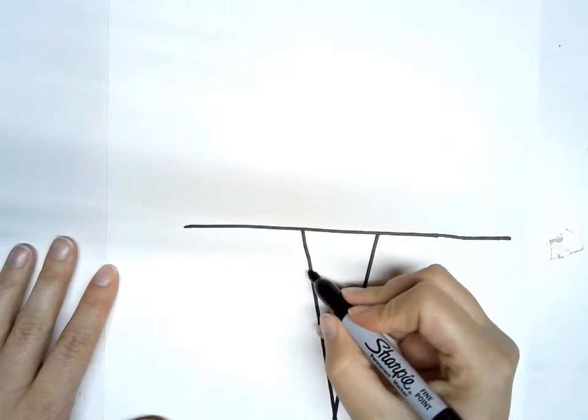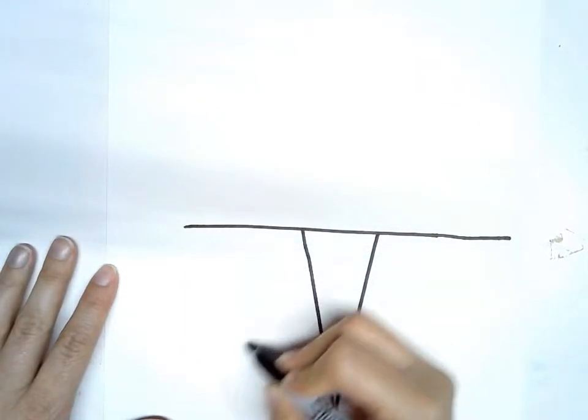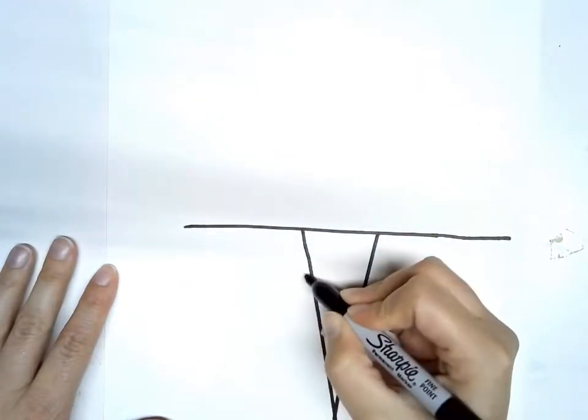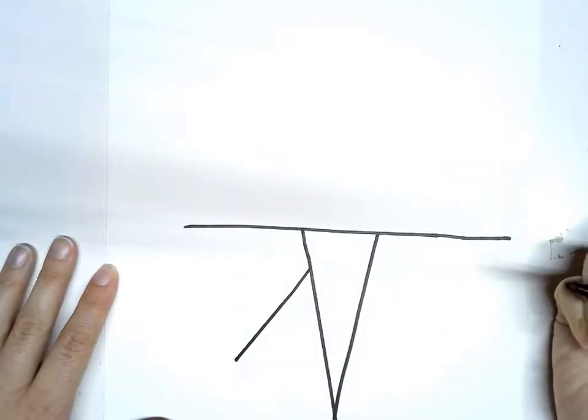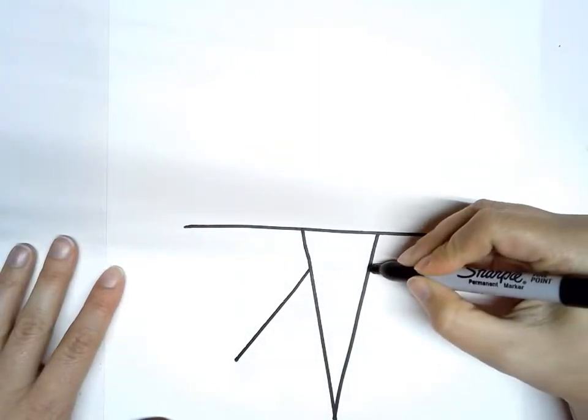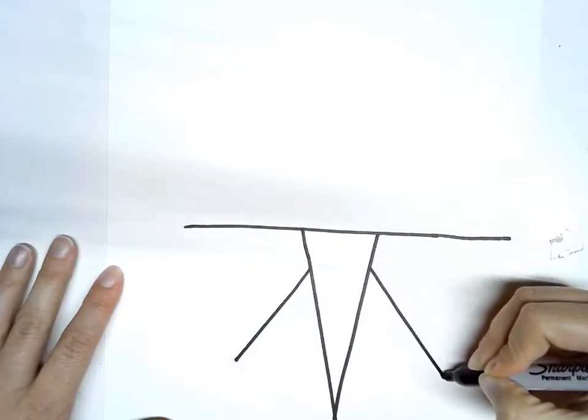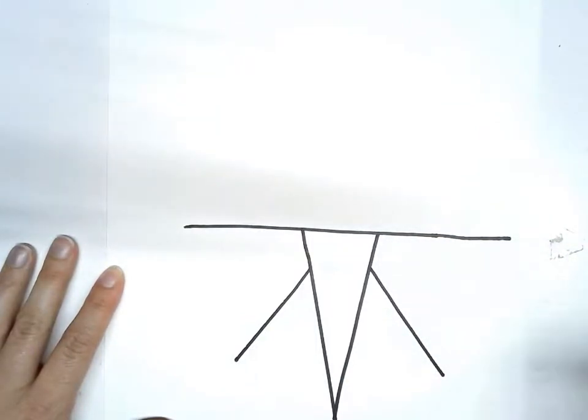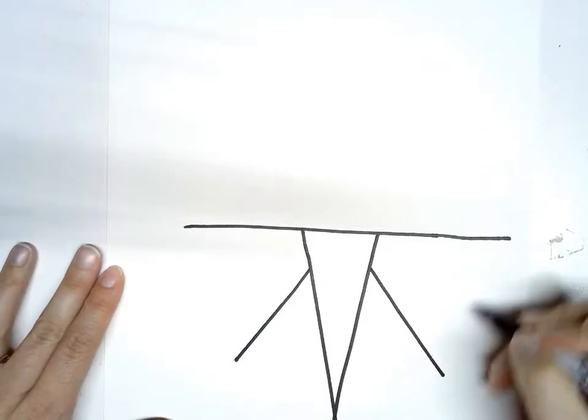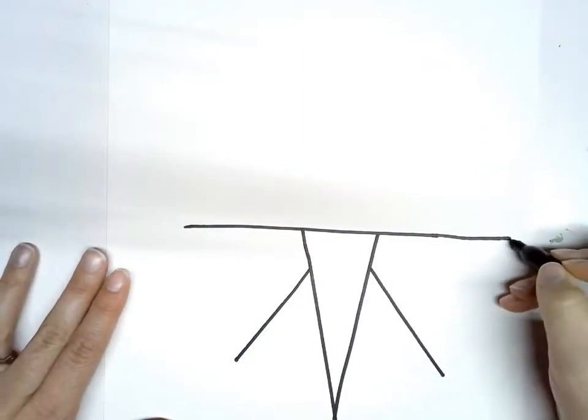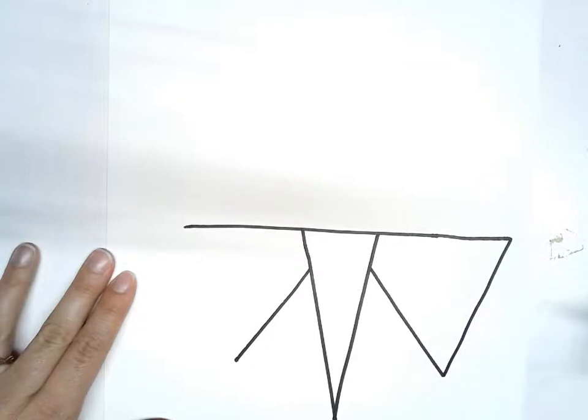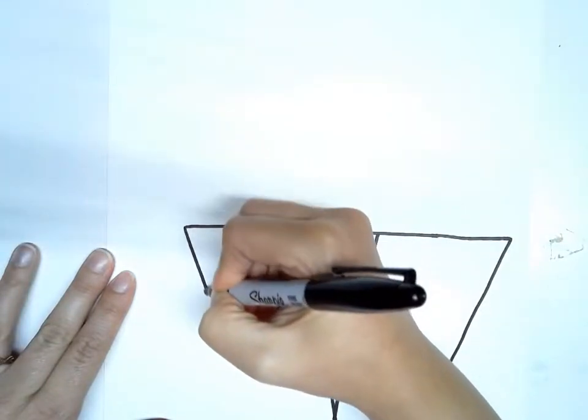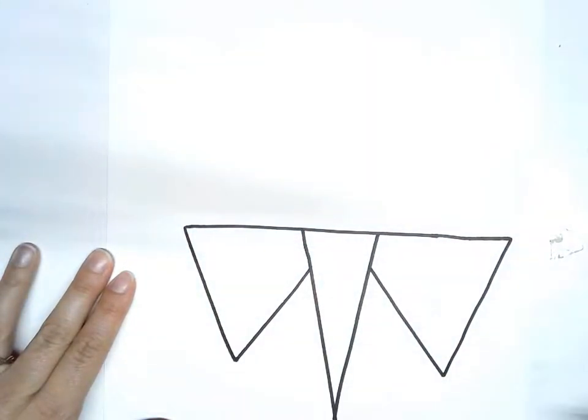So the next thing I'm going to do is draw an angled line that comes out of this side of the triangle. And the same thing on the other side. Then I'm going to connect the two sides, the two lines I drew to make the sides like that.